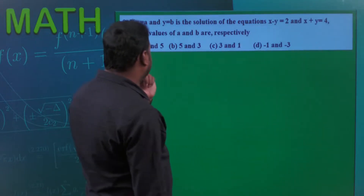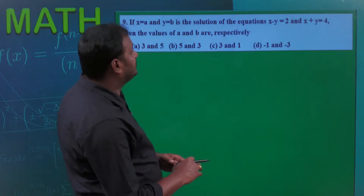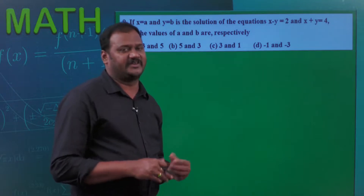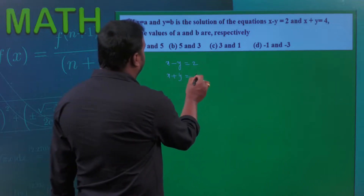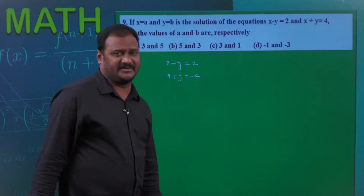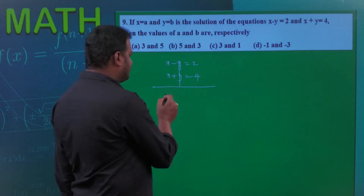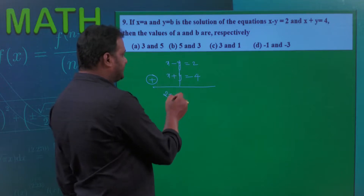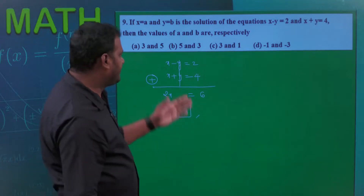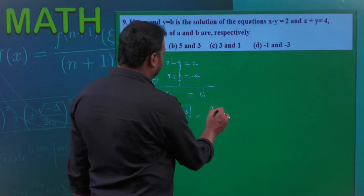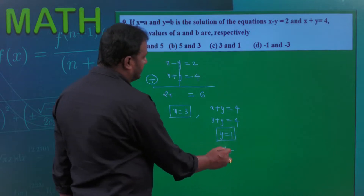Next: x = a and y = b is the solution of x - y = 2 and x + y = 4. Find the values of a and b. Using the elimination method, adding both equations: 2x = 6, so x = 3. Substituting into x + y = 4: 3 + y = 4, so y = 1. Therefore a = 3 and b = 1.